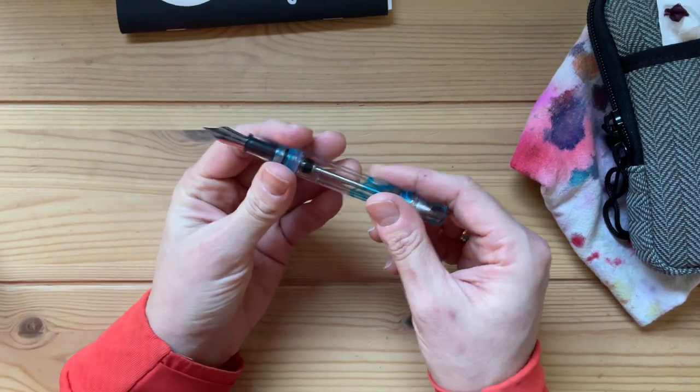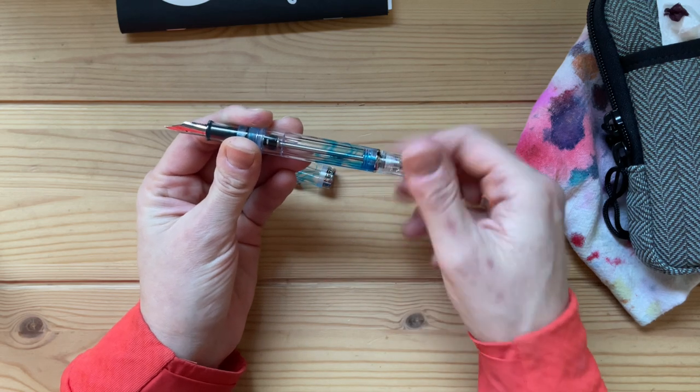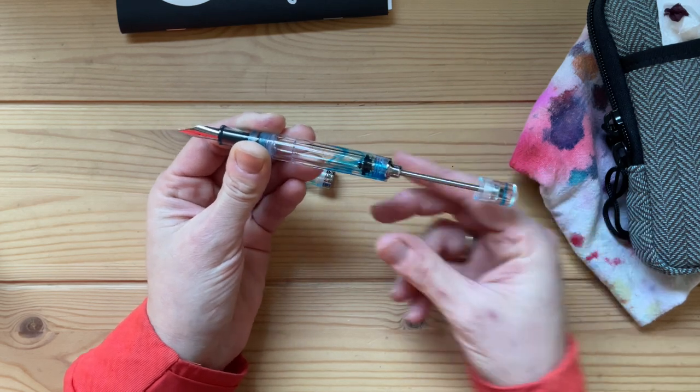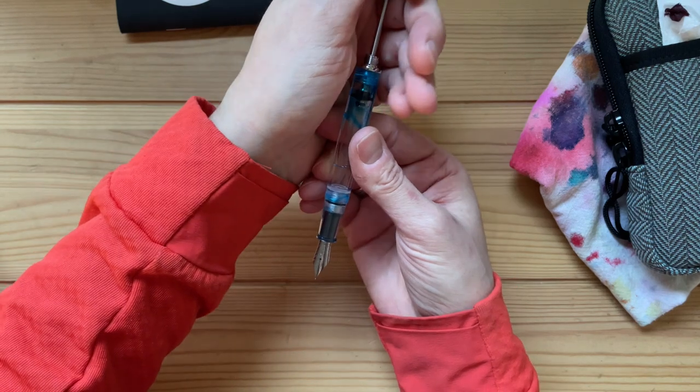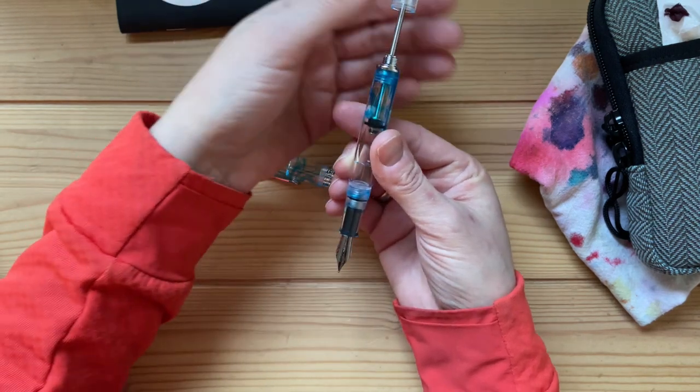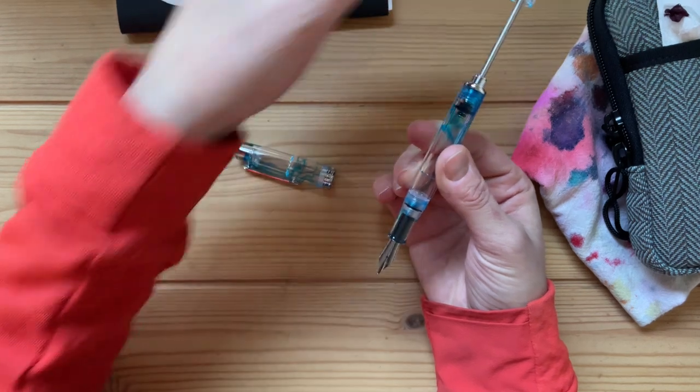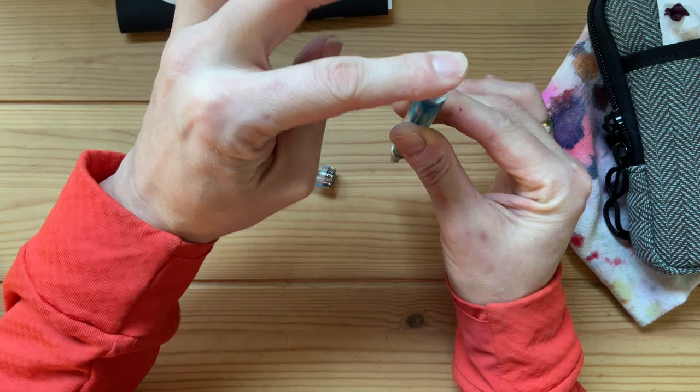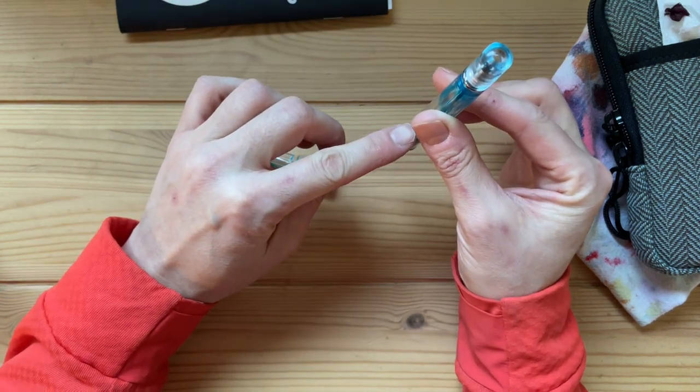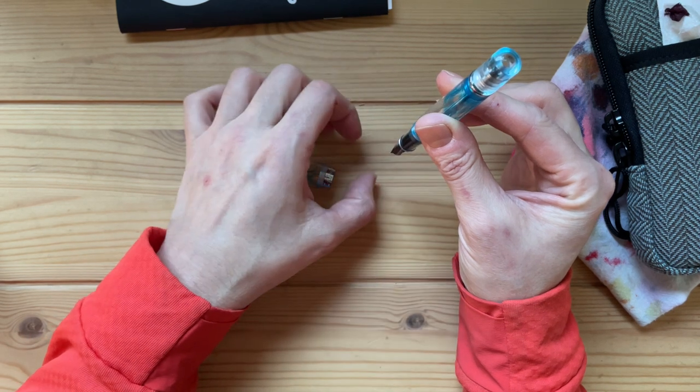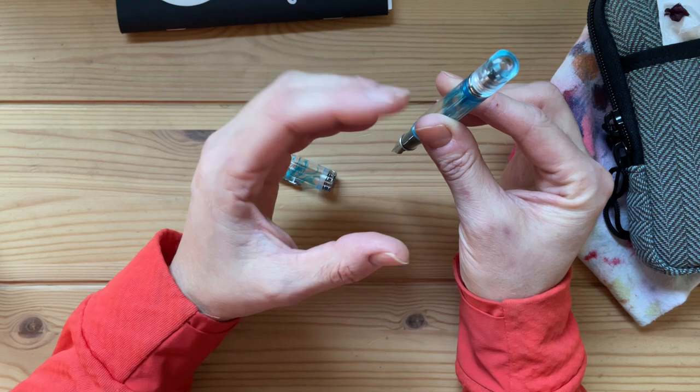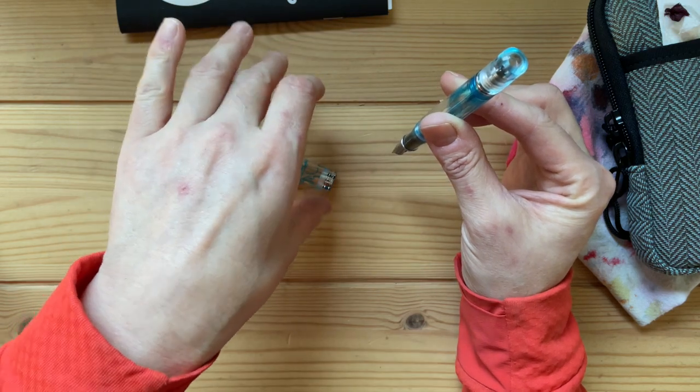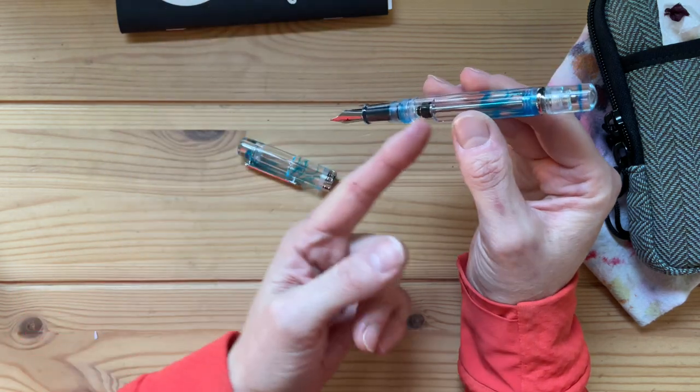For a vacuum filler fountain pen, what you do is you unscrew the back knob until you can move the piston, then you pull out the piston all the way. Then you submerge it into your ink, and then you push down. At first, nothing happens until you hear the click sound. That's when the vacuum is completely empty, and it will suck up the ink into your pen and fill it that way.